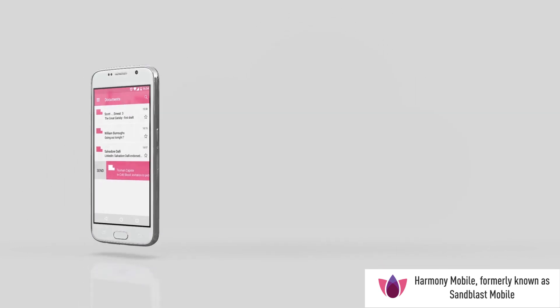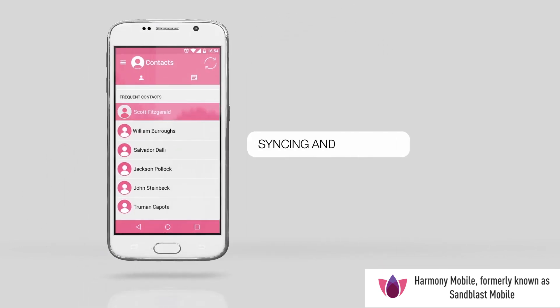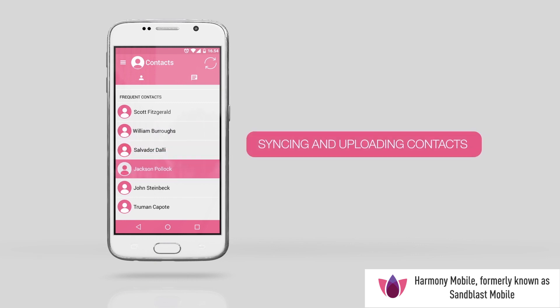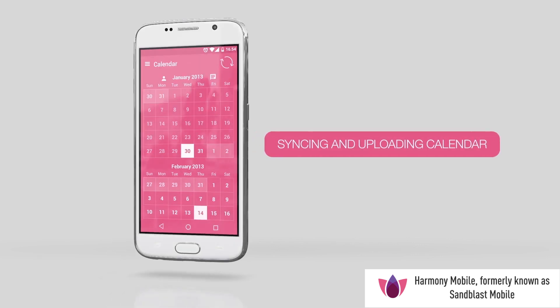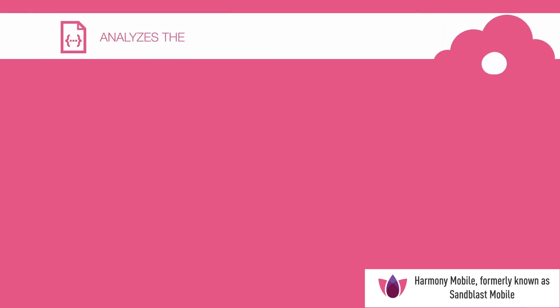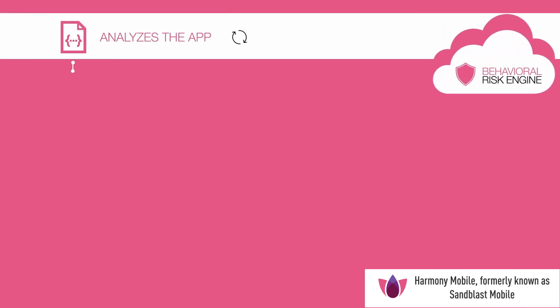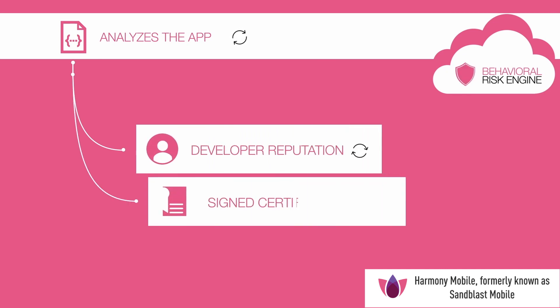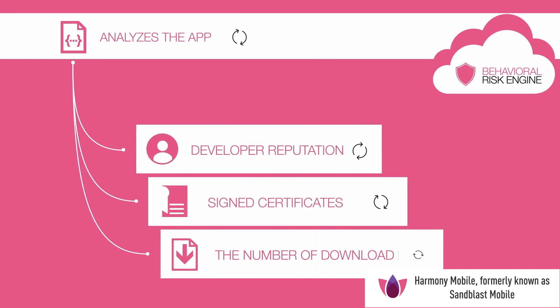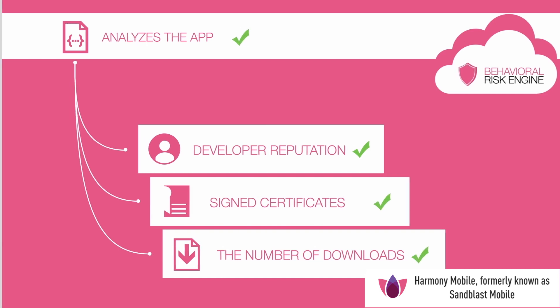Some trustworthy apps may exhibit risky behavior, such as syncing and uploading contacts or calendar entries. To avoid false positives, the Behavioral Risk Engine whitelists trustworthy apps by correlating risk analysis data with aggregated factors, such as the developer's reputation, signed certificates and the number of downloads. This improves the reliability of the security the solution provides.